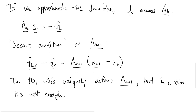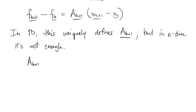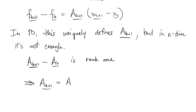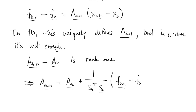What we add is an additional condition: that the difference from one step to the next in this Jacobian approximation has rank one. There's an argument that rank-one matrices are the simplest kind, and that's one justification for this. When you make that assumption and work out the formulas, we get the update rule going from Ak to Ak+1, and this is known as the Broyden update formula.